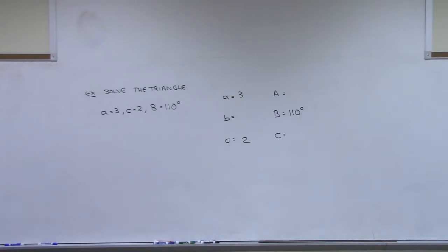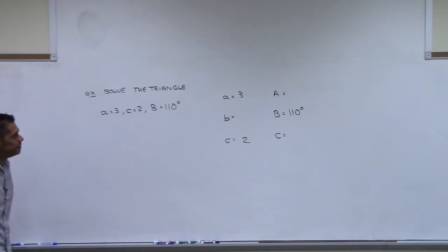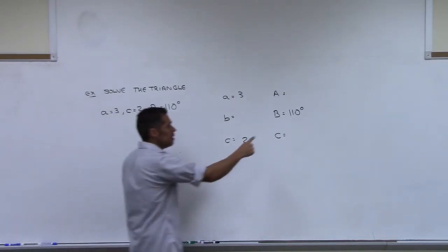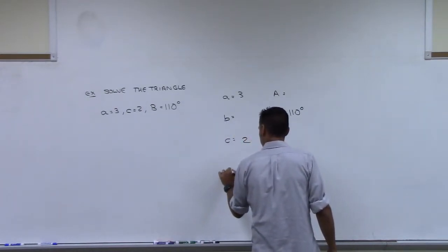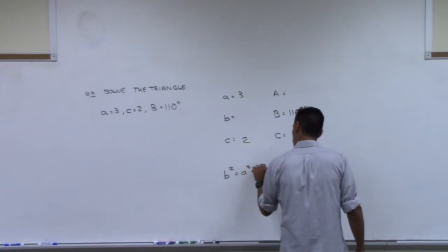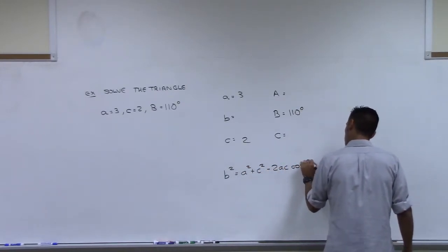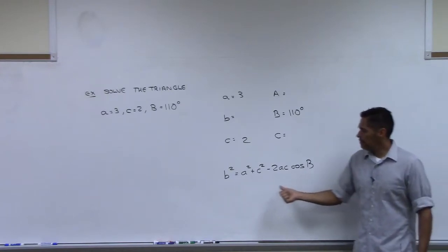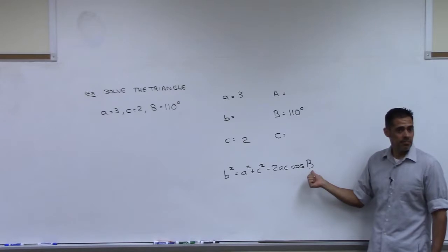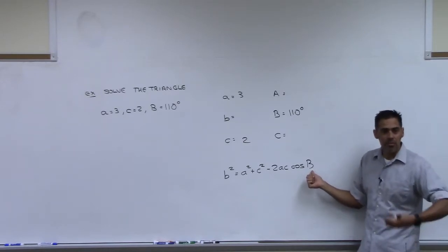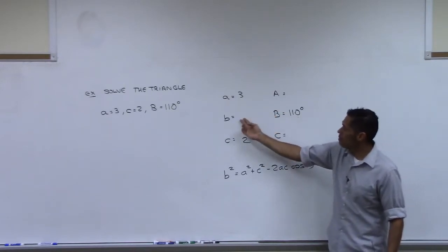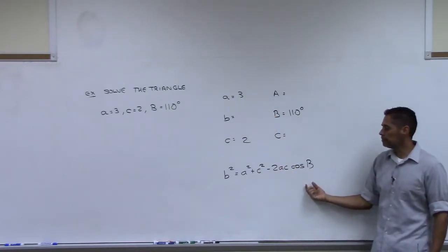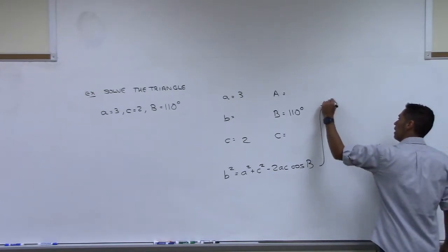Can we use law of sines here? No. Law of cosines. Now, what should we go after? Little b. Why? Because you already have big B. So if you go back and look at the formula — that's the law of cosines, there were three of them — notice that to find little b, you need to know what big B is. I've got big B, so I can go get little b so long as I have A and C, which we do.